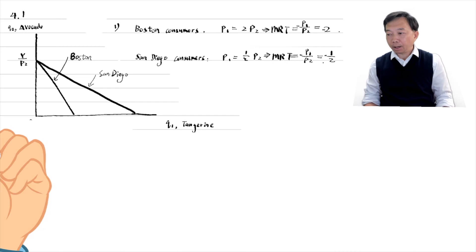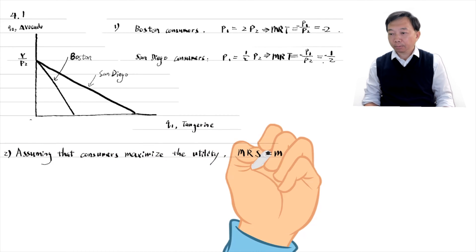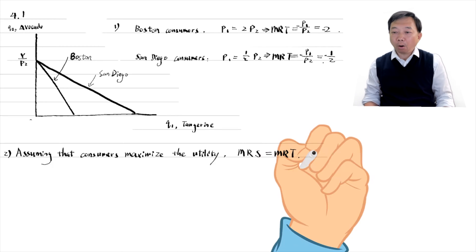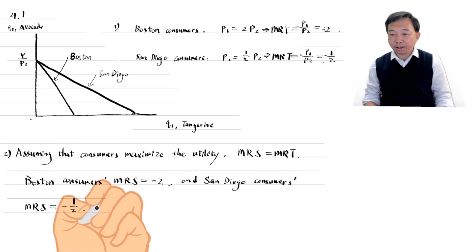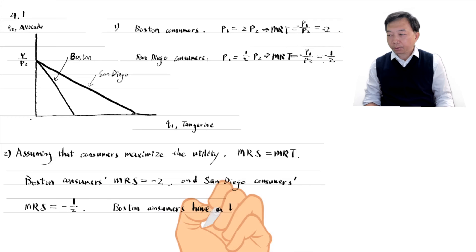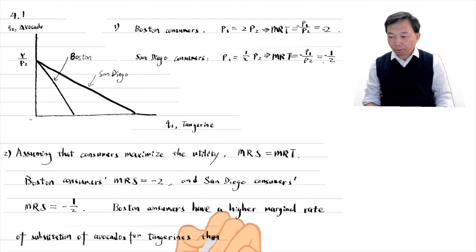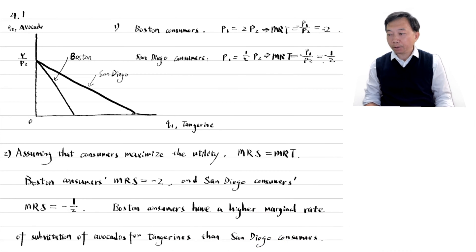In the second step, we find the marginal rate of substitution. We assume that consumers maximize their utility — in other words, consumers are at the optimal bundles. So the marginal rate of substitution equals the marginal rate of transformation, which means Boston consumers' marginal rate of substitution is minus 2, and San Diego consumers' marginal rate of substitution is minus 1 over 2. Boston consumers have a higher marginal rate of substitution of avocados for tangerines. The former are willing to give up two avocados for one more tangerine, while the latter wants to exchange one avocado for two tangerines.